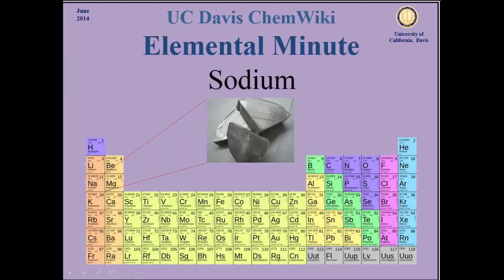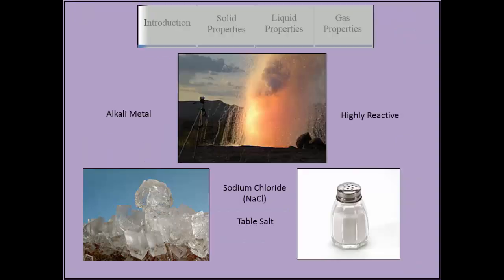Sodium is a highly reactive alkali metal found in group 1 of the periodic table. It is the sixth most abundant element in the earth's crust, but is not purely found in nature. Due to its high reactivity, sodium often combines with other elements to form compounds such as salt.